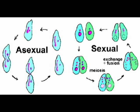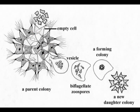Asexual reproduction is reproduction which does not involve two people. Only one parent is involved in asexual reproduction. A more significant definition is agamogenesis, which refers to reproduction without the fusion of gametes. Asexual reproduction is the primary form of reproduction for single-celled organisms.